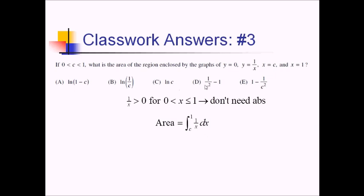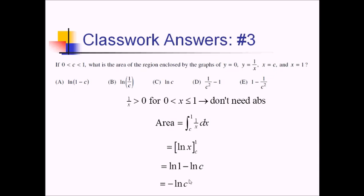The antiderivative of 1/x is ln of x. Normally there would be an absolute value, but since we're only using x-values between 0 and 1, we won't be plugging negative values into ln. Evaluating from c to 1 gives ln(1) minus ln(c), and ln(1) is just 0, so this is negative ln(c). Since that doesn't appear in the answer choices but ln(c) positive does, we use log rules: moving the negative inside as an exponent of negative 1 on c gives ln(1/c). That's answer choice B.